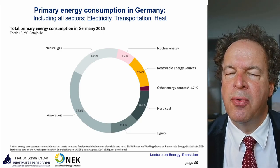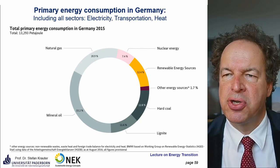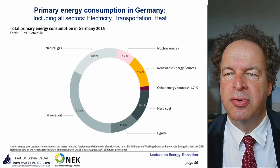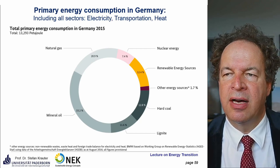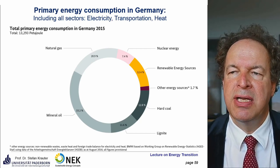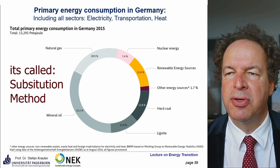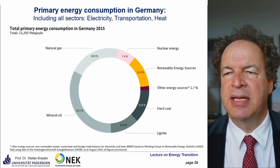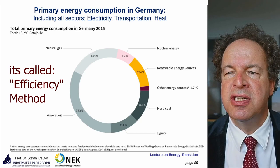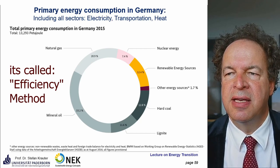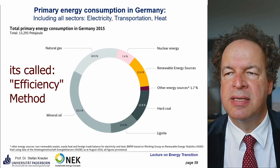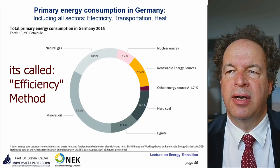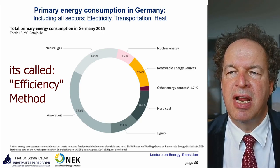This is due to the way primary energy consumption is calculated — the so-called efficiency method. For renewables, the electricity output is accounted for directly as primary energy, rather than calculating the equivalent calorific value of fossil fuel needed to generate it (about three times as much). Therefore the share of renewable energy appears relatively low in these statistics.